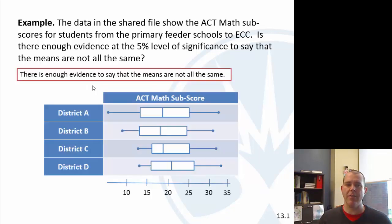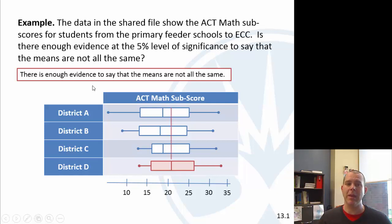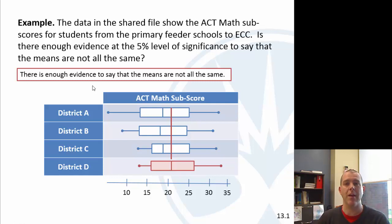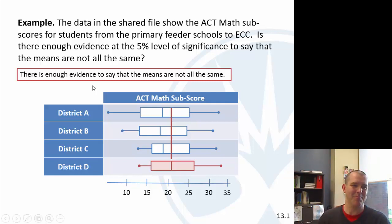Looking at a visual summary: we have all four districts, and it's really that fourth one that's the red flag — that's the mean that is probably not the same as the others. Extending that mean visually, it does appear to be different from the rest. And that's it for the analysis of variance — we just did one example. Congratulations, you made it through all of them!